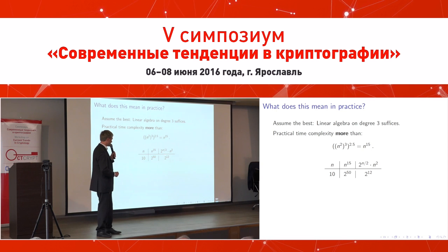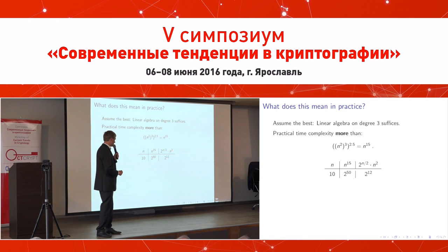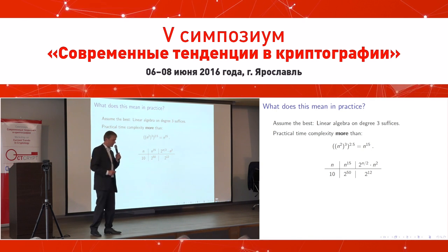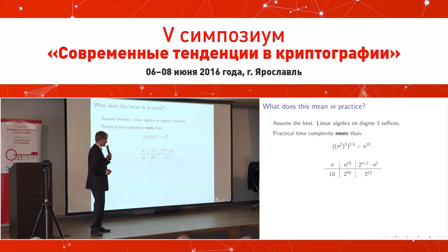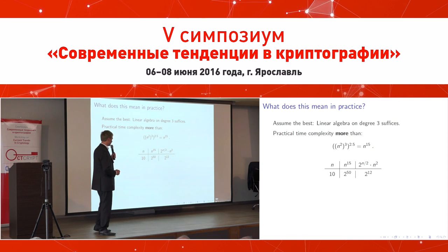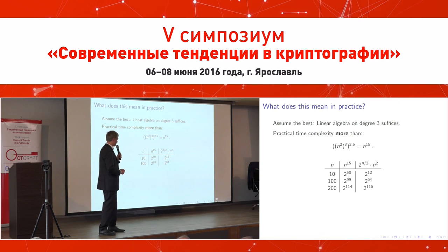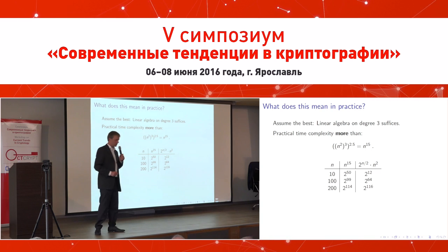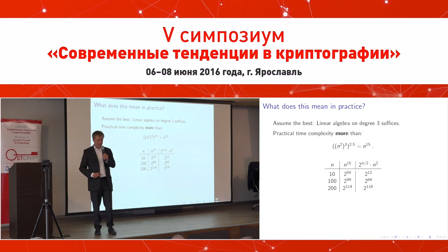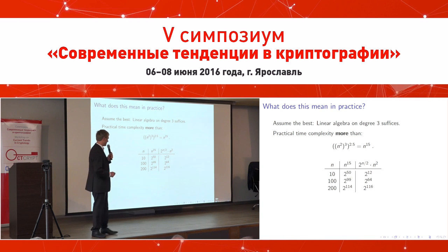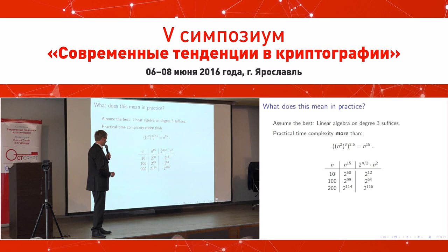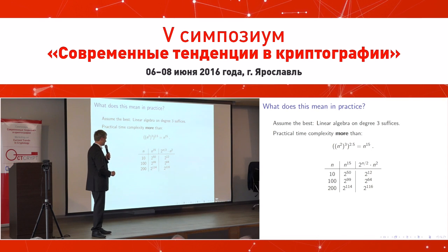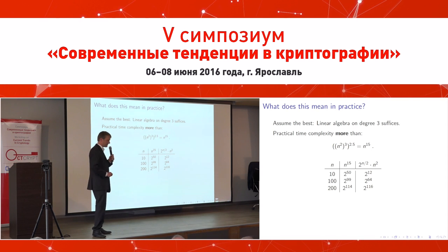Assuming as a lower bound that linear algebra can be done with exponent 2.5 — which is an underestimation in practice — you get an overall exponent of 15. For example, at n=10, 10^15 ≈ 2^50, and the break-even with the rho method might occur around n=200 — but even that is probably optimistic.